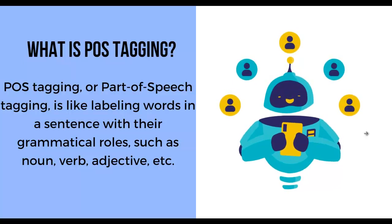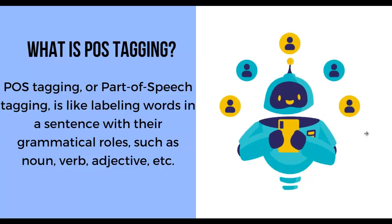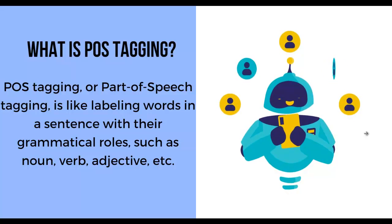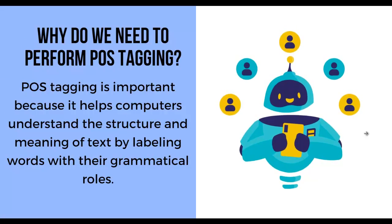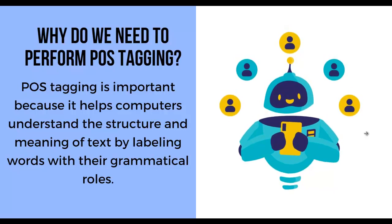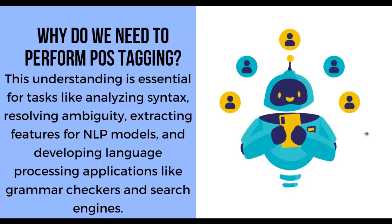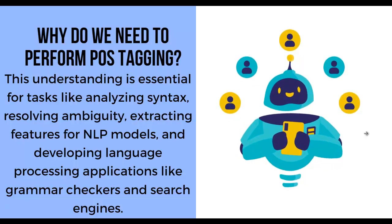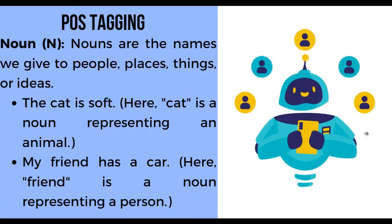Let's start our discussion with: what is POS tagging? POS tagging, or part of speech tagging, is like labeling words in a sentence with their grammatical roles such as nouns, verbs, adjectives, etc. POS tagging is important because it helps computers understand the structure and meaning of text by labeling words with their grammatical roles. This understanding is essential for tasks like analyzing syntax, resolving ambiguity, extracting features for NLP models, and developing language processing applications like grammar checkers and search engines.